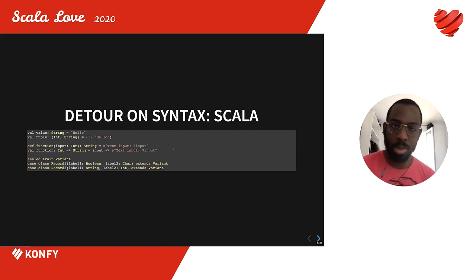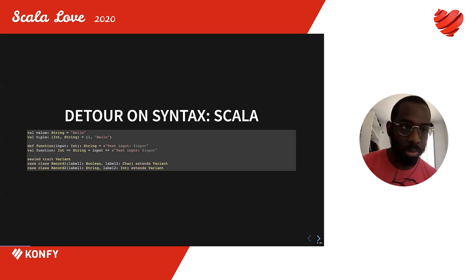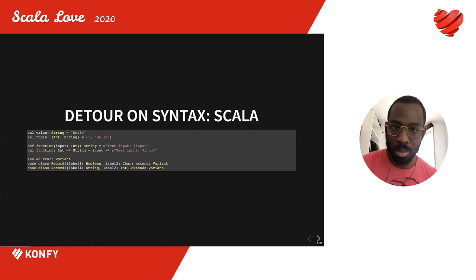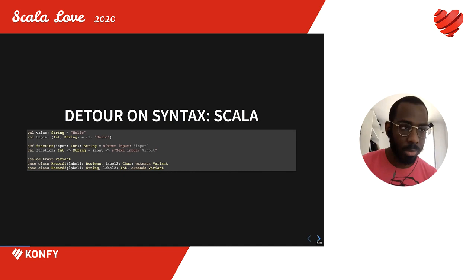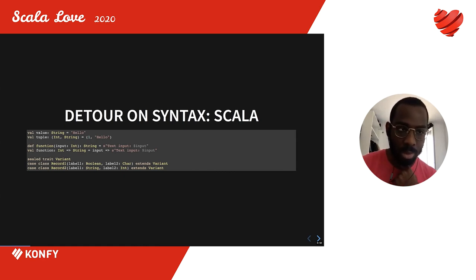Before starting, I want to give the syntax of the languages I will use for examples. The first language is Scala. The 'val' keyword declares an immutable value. I'll show a tuple of integer and string, a function defined with the 'def' keyword taking an integer and returning a string, and a lambda function. I'll also define a variant type — an alternative between two records.